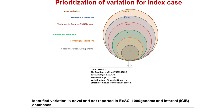We then looked for only rare and novel variations, around 87. Because consanguinity was involved, we filtered for only homozygous variations and compared whether the variation was present in the parents. Out of that, we identified only one variation present in the MYBPC3 gene on chromosome 11. The variation was a stop-gain mutation which caused the introduction of a stop codon at codon 208 (Q208X), causing premature truncation of the protein. This variation was novel and not reported in ExAC or 1000 Genomes internal control databases.